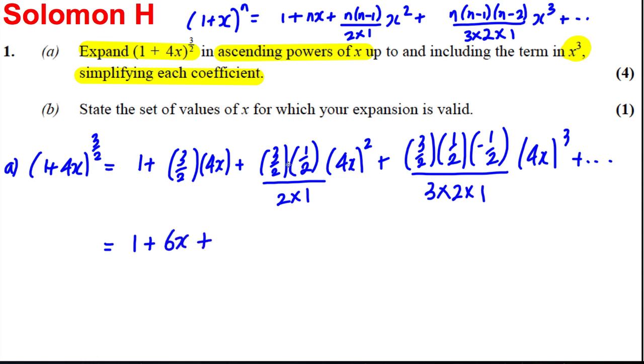Then we just type these into our calculator: 3/2 multiplied by a half all over 2 × 1, and then multiplied by (4x)² which should be 16x². This would give me 6x² as well when I do that.